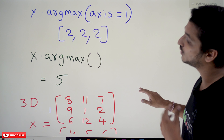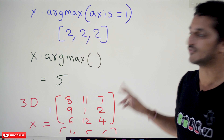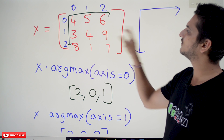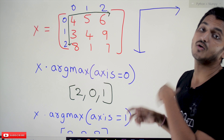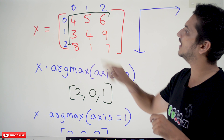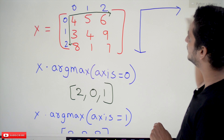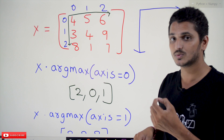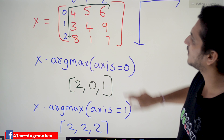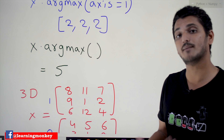If you don't give any axis value with x.argmax(), it takes all elements in sequential order: 4, 5, 6, 3, 4, 9, 8, 1, 7. Out of all those elements the maximum value is 9, which appears at index 5 when counting sequentially. So the output is 5. Let's now try to understand how this works in three-dimensional arrays.